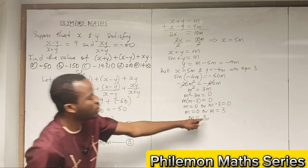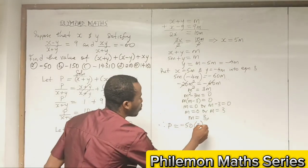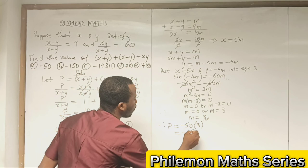Therefore our P will be -50 times (x + y), which is m, which is 3, which will now be -150.